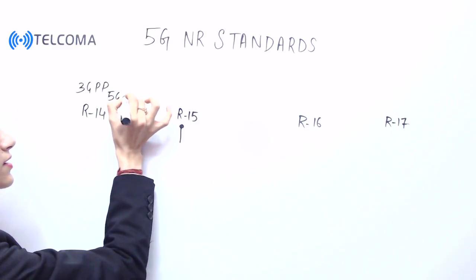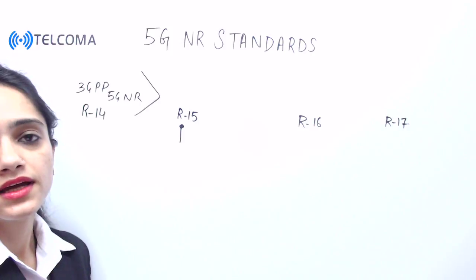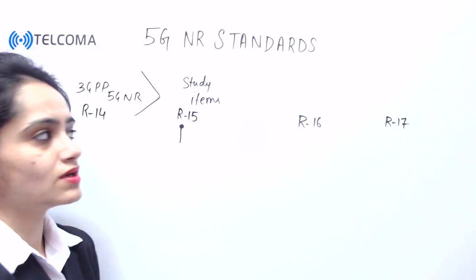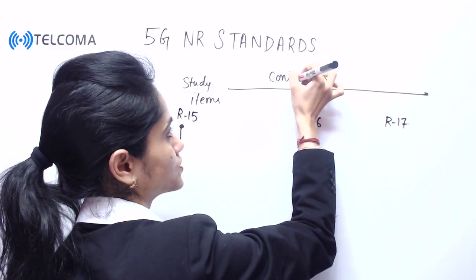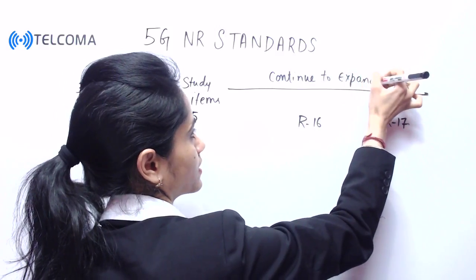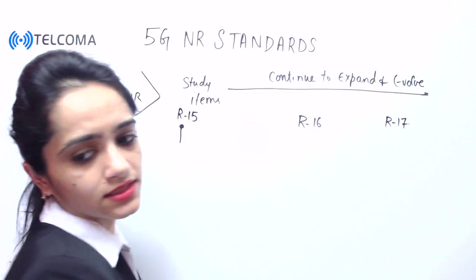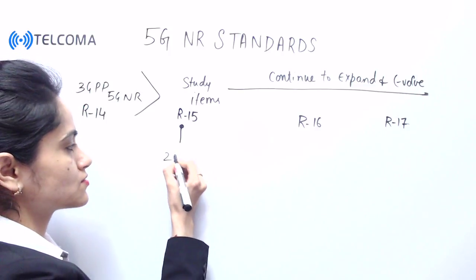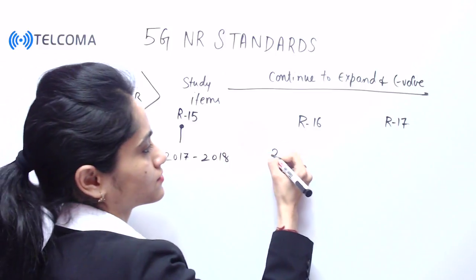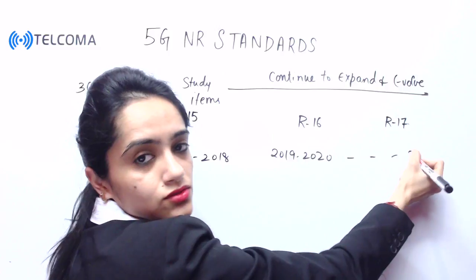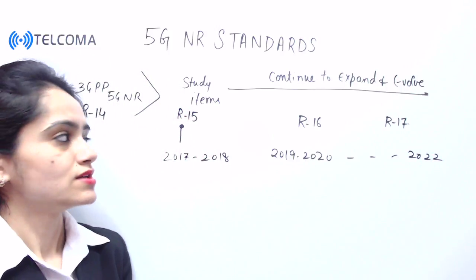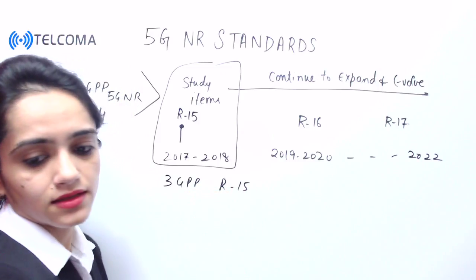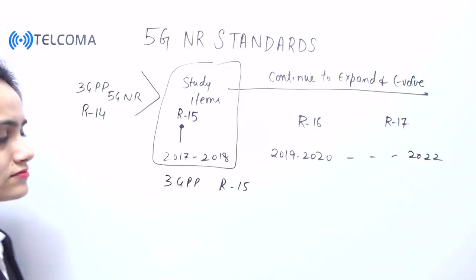We move to NR study items in Release 15. The standard continues to expand and evolve in further releases, with more evolution seen from 2017, 2018, 2019, 2020, and further up to 2022. Let's start with 3GPP Release 15, which is the foundation for 5G NR.